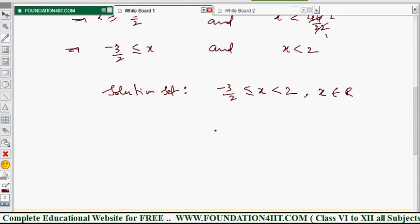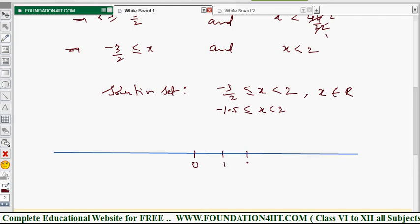So we can make the graph. I take the straight line. The graph of the solution set is in this given line. This is minus 3 by 2 is minus 1.5, less than 2 also. So here, 0, 1, 2, 3, and negative 1, negative 2, negative 3.